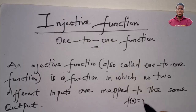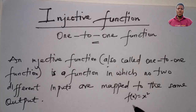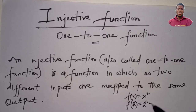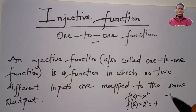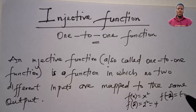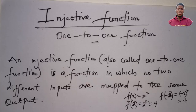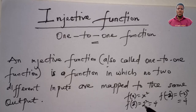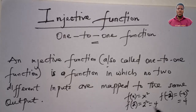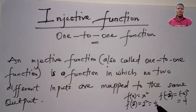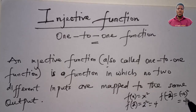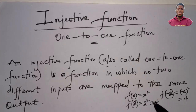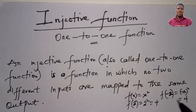For example, take the function f(x) = x². If x = 2, then f(2) = 2² = 4. If x = -2, then f(-2) = (-2)² = 4 as well. If we take the domain as the set of all real numbers, both 2 and -2 are real numbers, and plugging each into the function gives the same output of 4.